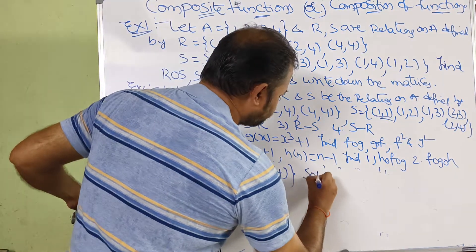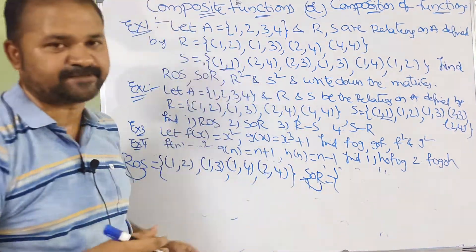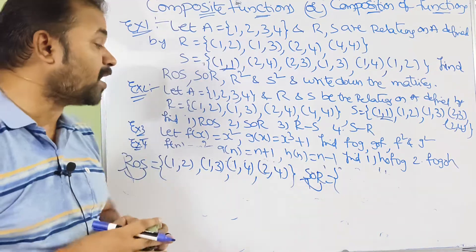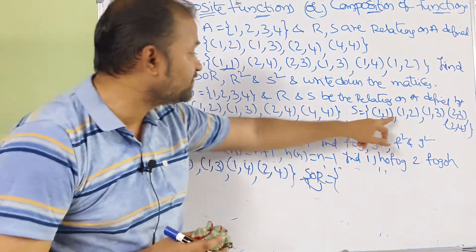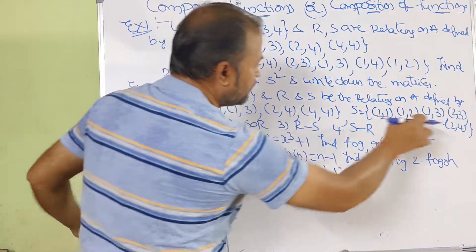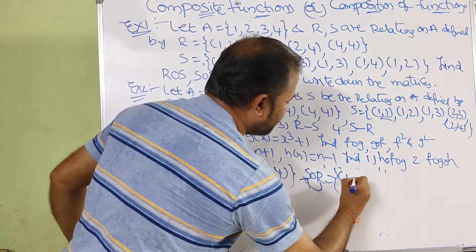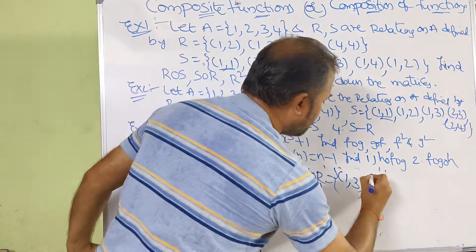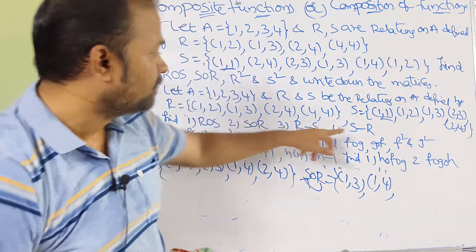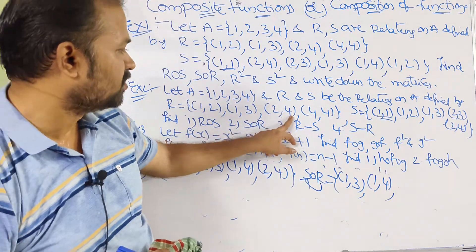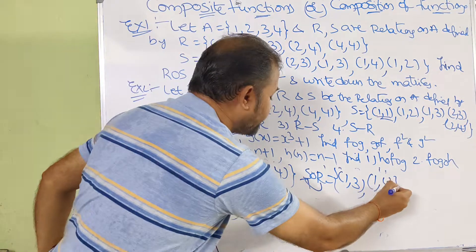Likewise compute S∘R. S∘R maps from R to S. Select (1,2) from R: S has pairs beginning with 2 — (2,3) and (2,4) — giving (1,3) and (1,4). Next (1,3): no pair in S begins with 3. Next (2,4): no pair in S begins with 4. Next (4,4): no pair in S begins with 4. So S∘R = {(1,3), (1,4)}.